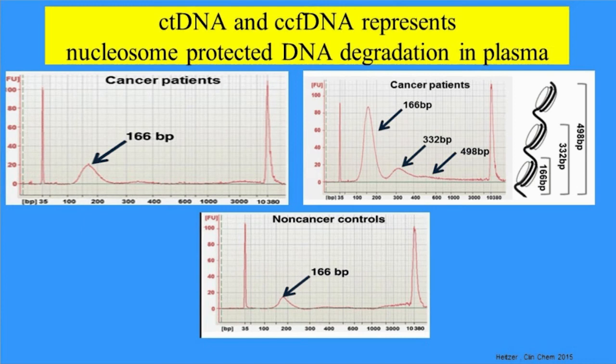The third point is that the size of the DNA we're looking at from the bloodstream is really very small — 160 base pairs. These are very small fragments because it's the DNA protected by the nucleosome. All the other DNA in the bloodstream, not only from the tumor but also from normal cells, has the same size. This means we cannot discriminate based on size the DNA coming from tumor cells versus non-tumor DNA. Our analysis should be adapted to detect these very small fragments.